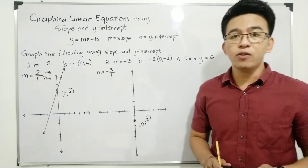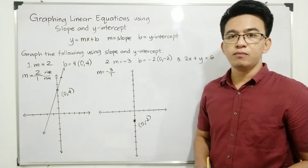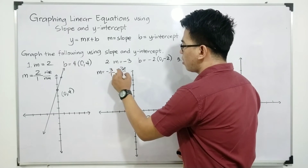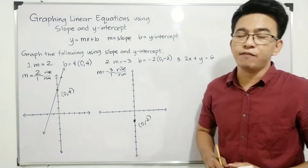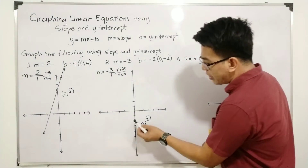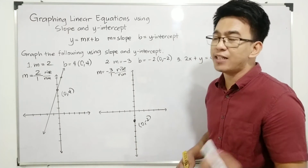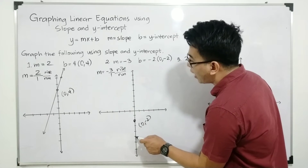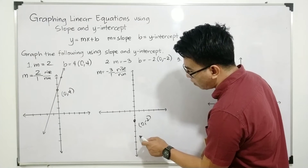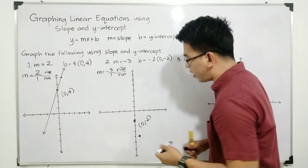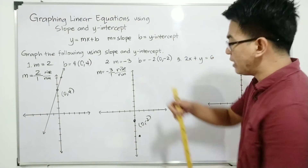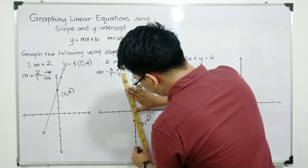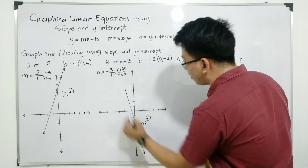Now, to take the second point, we will use the slope, which is negative 3 over 1. Remember, this is rise over run. Your rise is equal to negative 3. Since the rise is negative, you will move downwards — 3 units: 1, 2, and 3. And your run is equal to 1, which is positive, so you will move 1 unit to the right. We are done locating the second point and we are now able to draw a straight line. We are done with the second example.